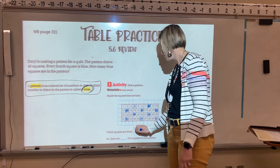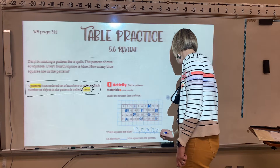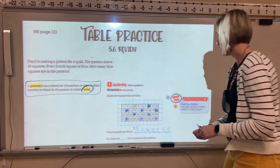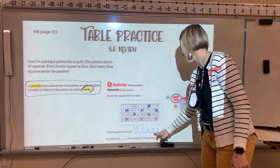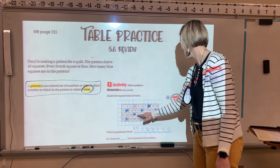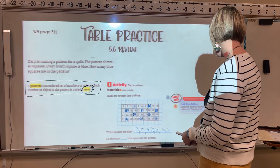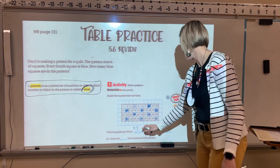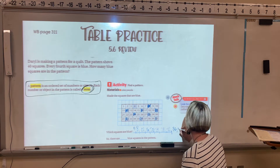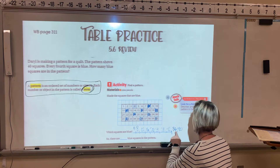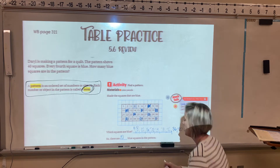Which squares are blue? 4, 8, 12, 16, 20, 24, 28, 32, 36, 40. You're listing the multiples of 4 because that's how the pattern landed. There are 10 blue squares total.